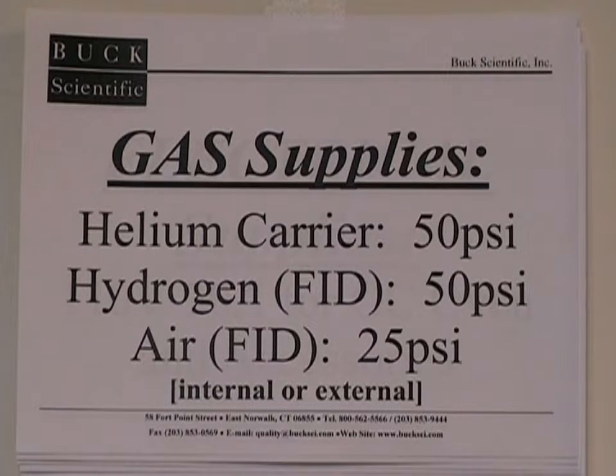This particular GC configuration utilizes an internal air compressor for the FID support gas, but you will still need an external supply of helium for the carrier and the purge, and hydrogen for the other FID support gas. These are the recommended delivery pressures from the regulator on the gas tank to ensure a consistent flow of gases into the GC, which will affect the consistency of your chromatography. Make sure these are set before beginning any analyses.